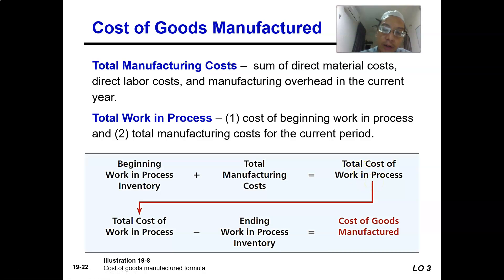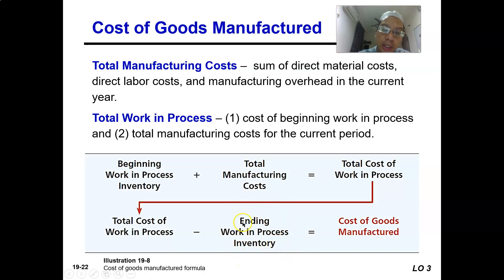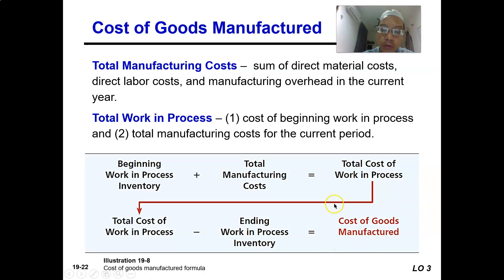At the end of the period, there is the remaining work in process — items that still have not finished, that are still under production. When they minus those items that have not finished, they are left with the items that have finished — those 100% completely manufactured. This is called cost of goods manufactured. That is how you calculate cost of goods manufactured.